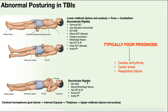Decorticate rigidity results from damage above the level of the red nucleus — including the upper midbrain, thalamus, internal capsule, and regions just below the cerebral hemispheres. The key distinguishing feature is that the elbows are flexed in decorticate rigidity, whereas they're sharply extended in decerebrate rigidity. Knee extension is also present in decorticate but with less resistance than in decerebrate.